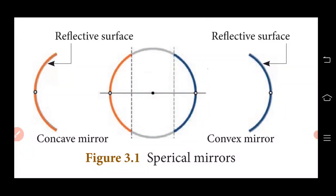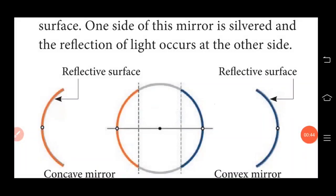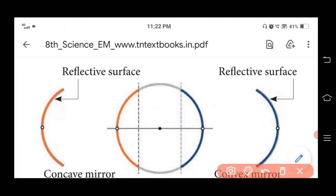Spherical mirrors are one form of curved mirror. If the curved mirror is a part of a sphere, then it is called a spherical mirror. It resembles the shape of a piece cut out from a spherical surface. As you can see in this picture, one side of this mirror is silvered and reflection of light occurs at the other side.